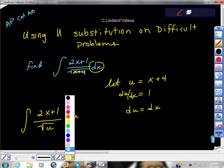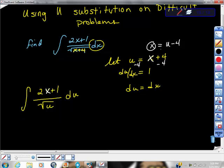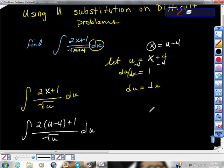So we have to strategize and say, what can we do? What I'm going to do now is I'm going to say x is the problem that I'm having. I would like to have the whole function in terms of u. So I'm going to look over here at my u statement. I'm going to solve for x. So I'll add negative 4 to both sides. And then I would be able to say that x is the same as u minus 4. So I'm going to take this and rewrite this: 2(u minus 4) plus 1 all over square root u du.